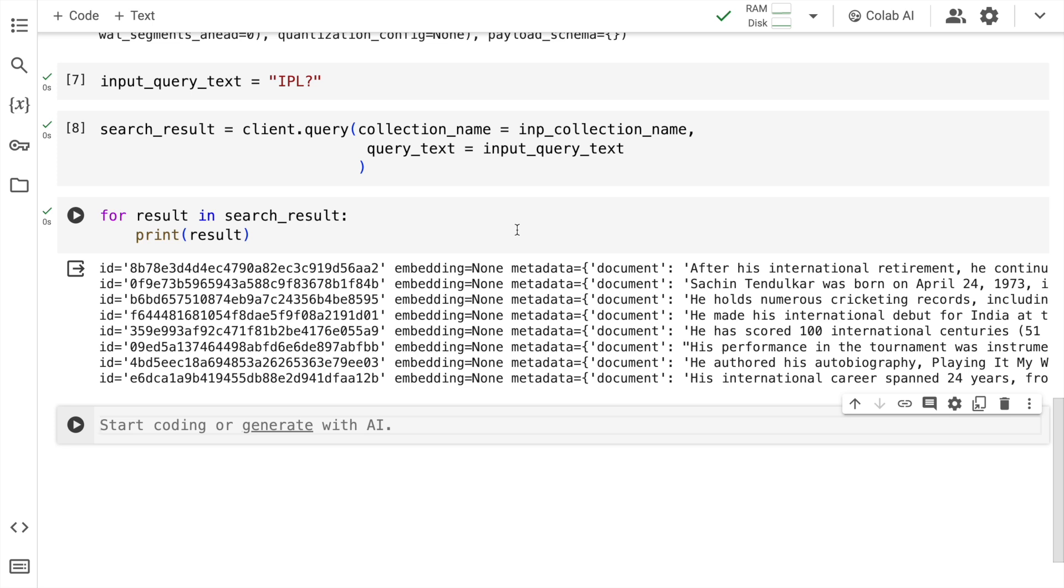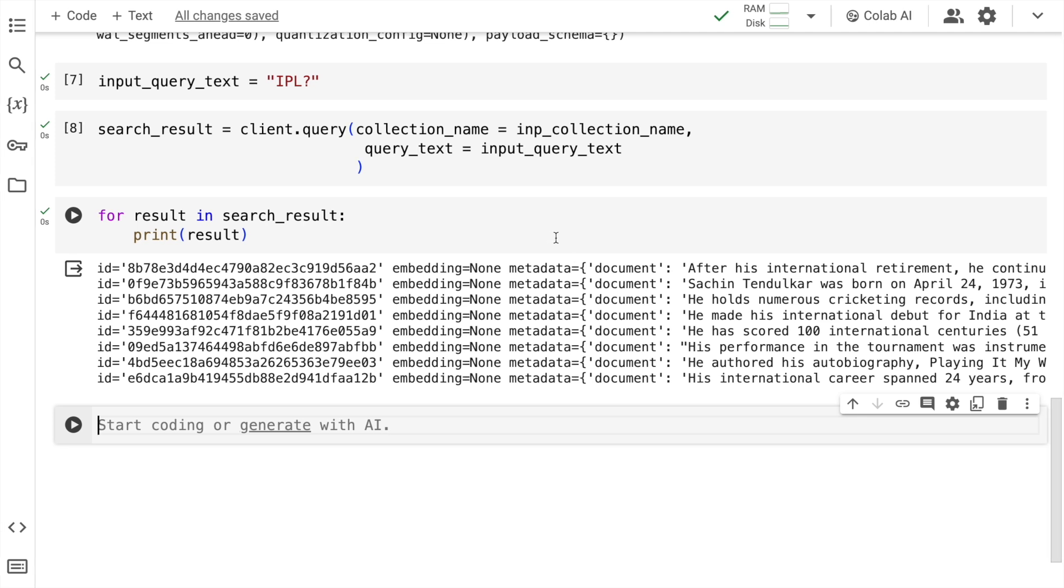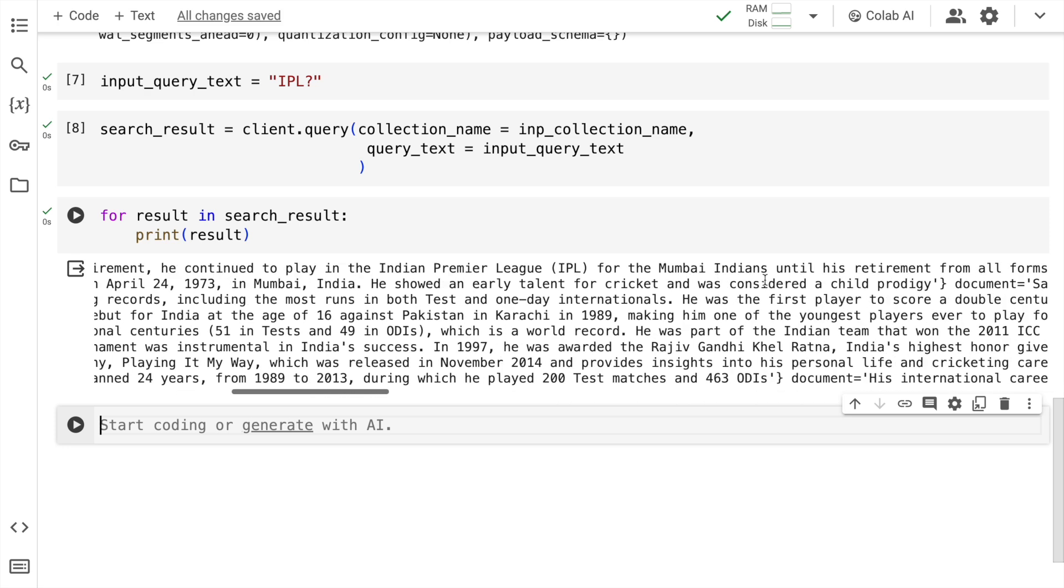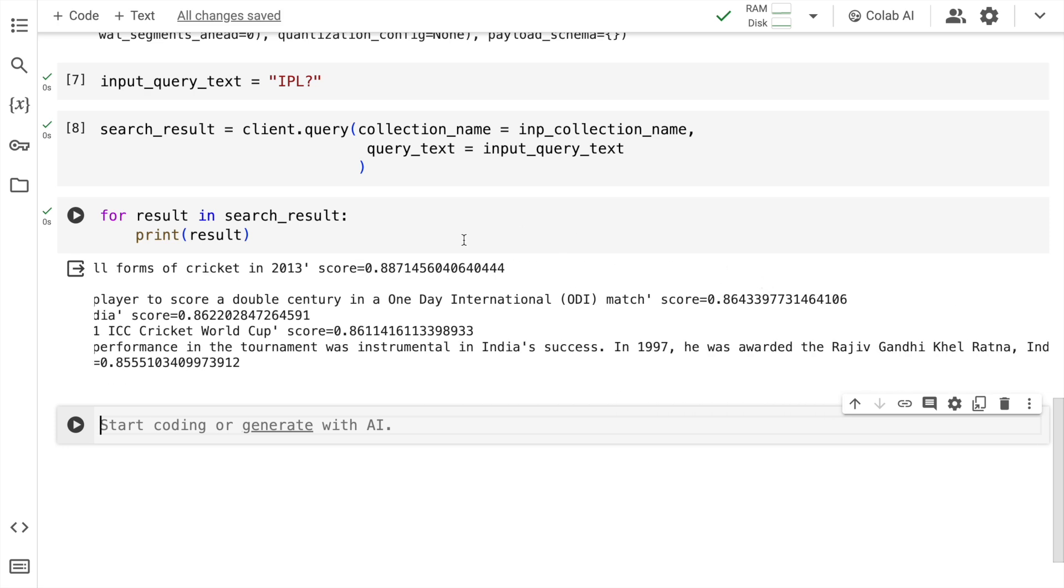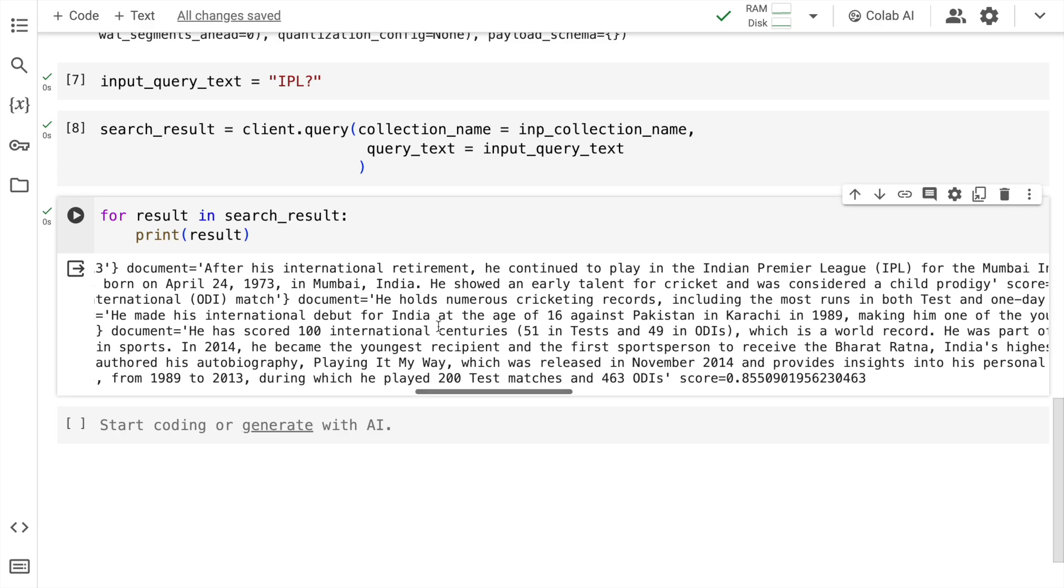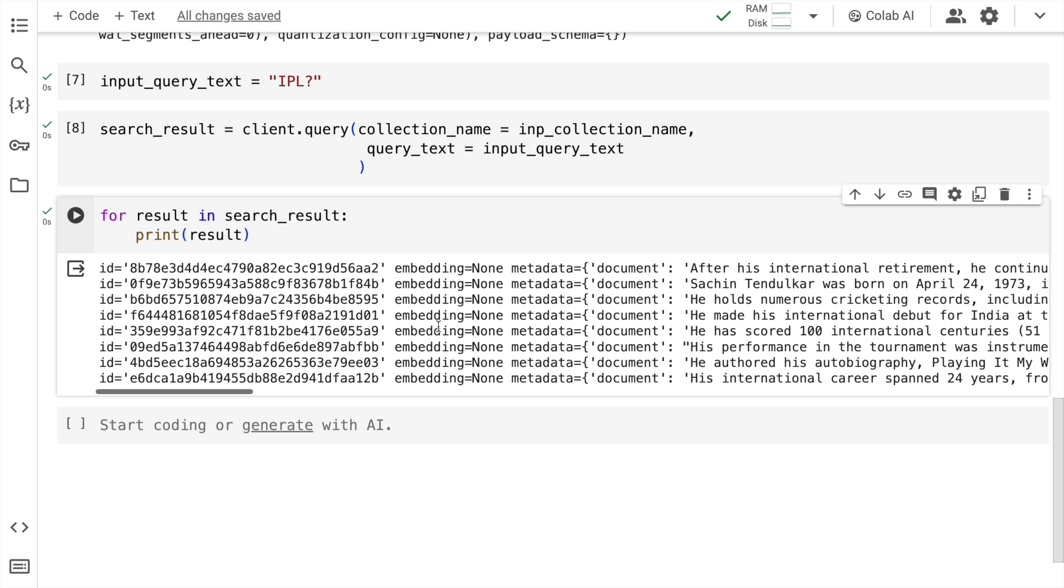In this search result what you see are the responses of the various entries that are existing in the vector database. And the results are basically sorted by the similarity of what the query is. So my question was regarding the IPL. And here the maximum score is given to the document which contains IPL, and the score value is 0.8871. This is the power of Quadrant, and this is what I wanted to show you as well.